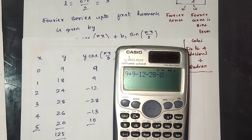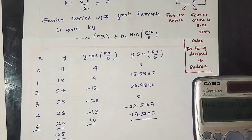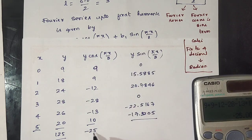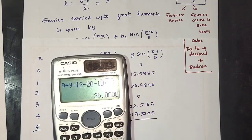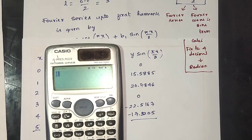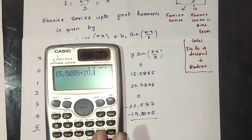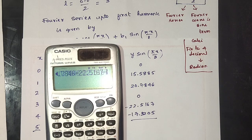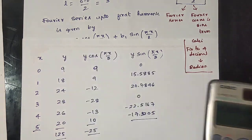Results: minus 28, minus 13, plus 10, minus 25. Next: 15.5885, minus 20.7846, minus 22.5161, minus 17.320, minus 3.464.